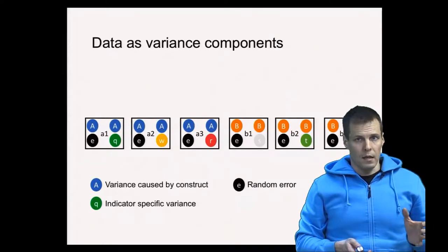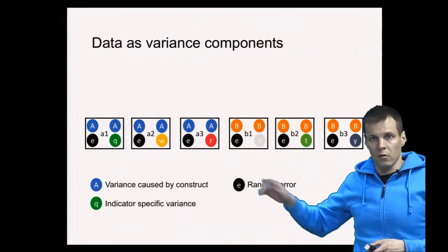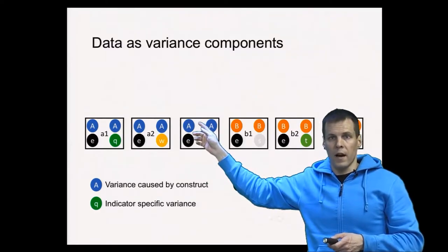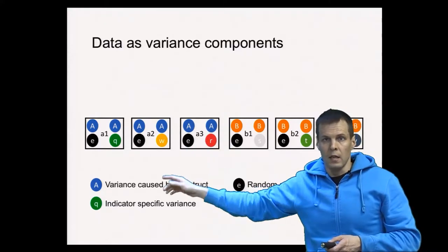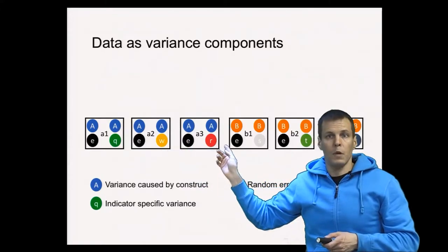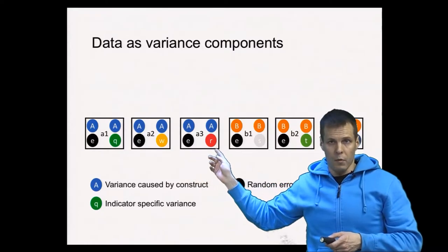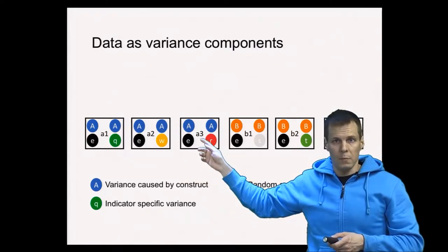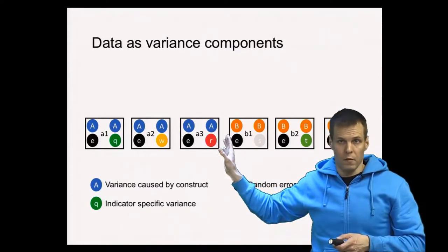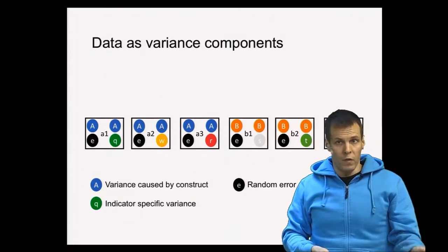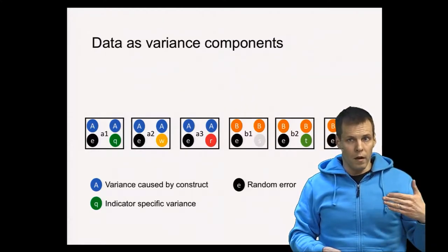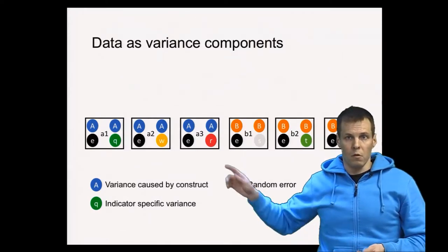Our data has six indicators. We have indicators A1 through A3 that are supposed to measure construct A. We can see that there is variation in these indicators due to construct A, and there is also some random noise — the E here — that's the unreliability of these indicators, and then we have some variance components that are reliable. For example, if we measure A3 multiple times, there is a specific part of A3 that is reliable but specific to A3. So unreliability is not the only source of measurement error; there is also some item uniqueness.